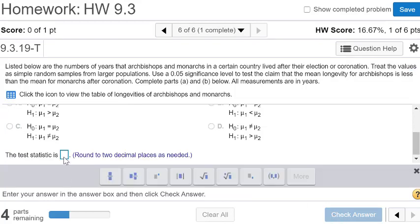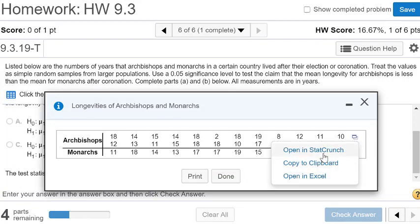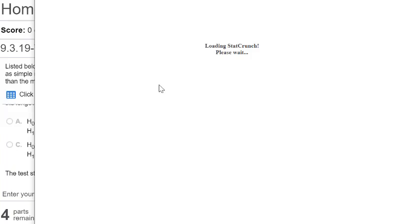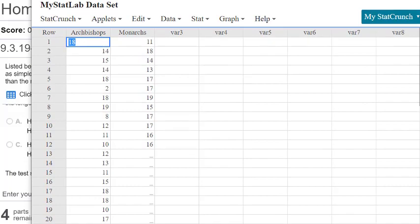The next part is going to ask us to compute the test statistics. For this we need the data set. So we'll click on the data set and we will have it copied over to StatCrunch.